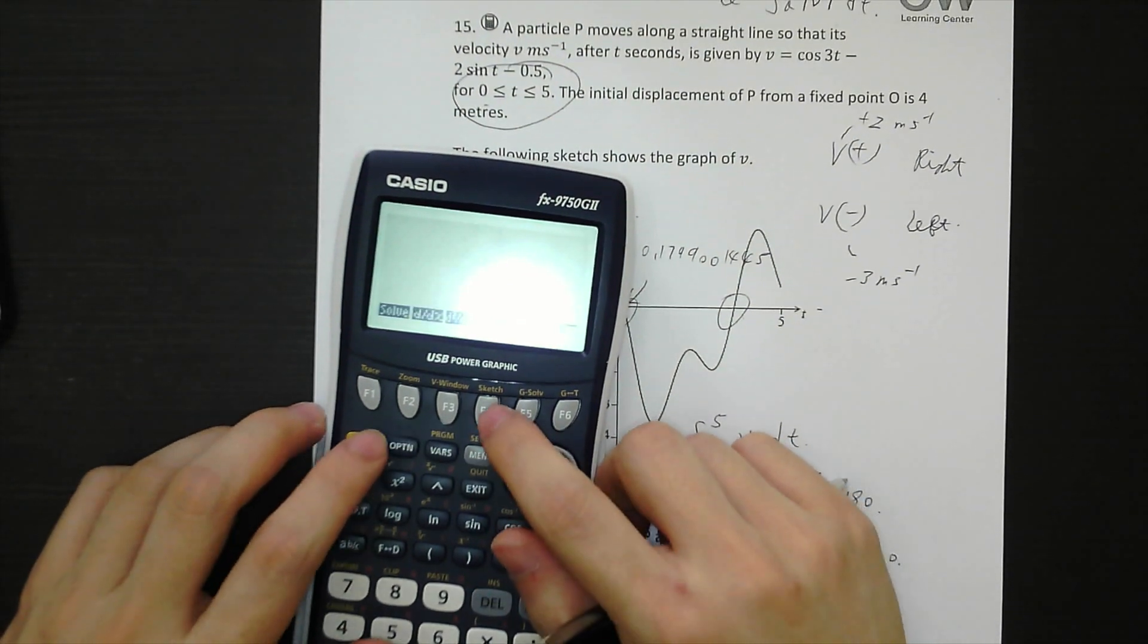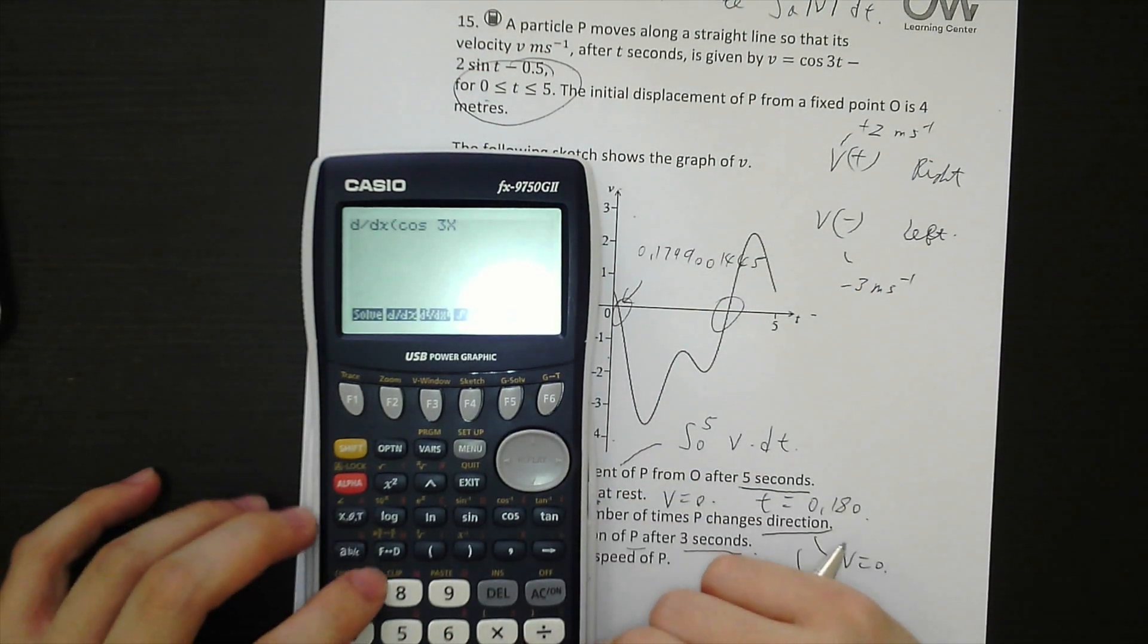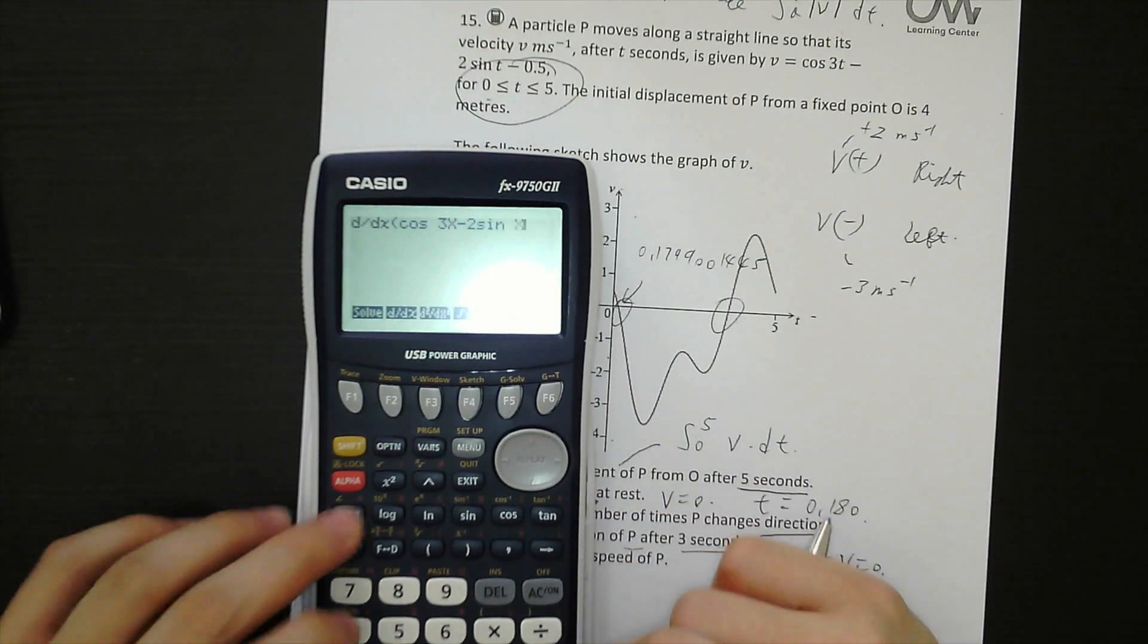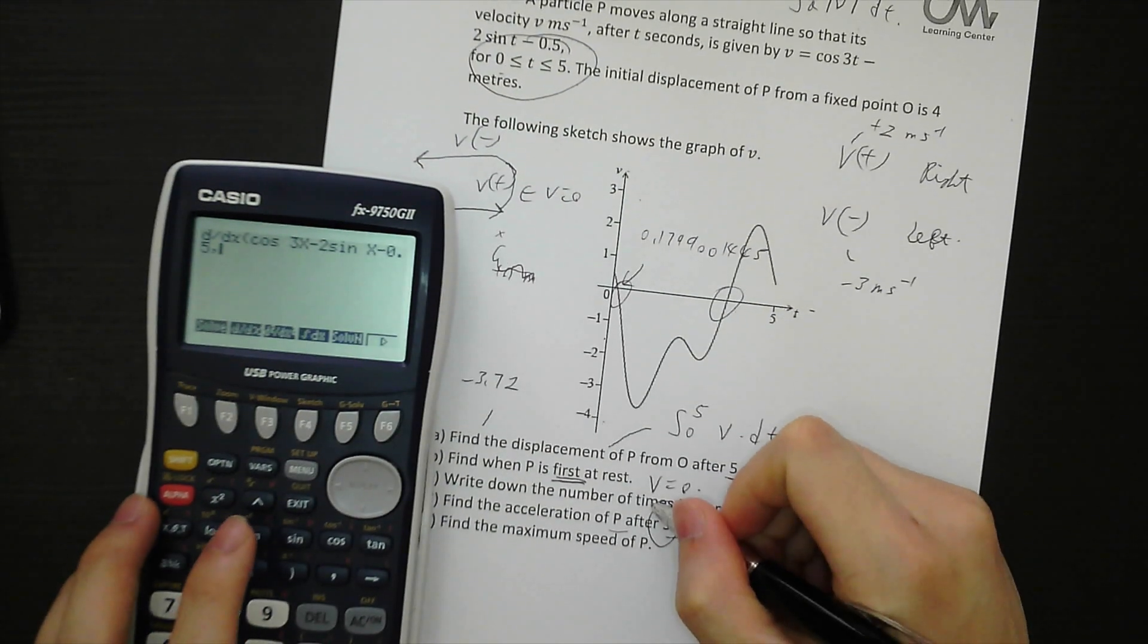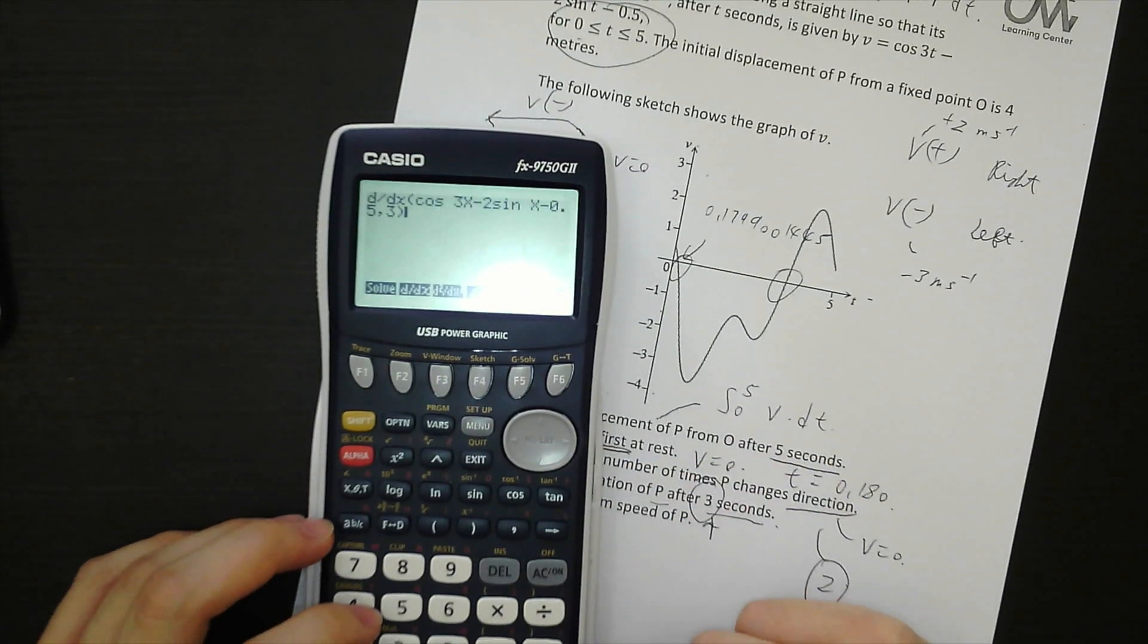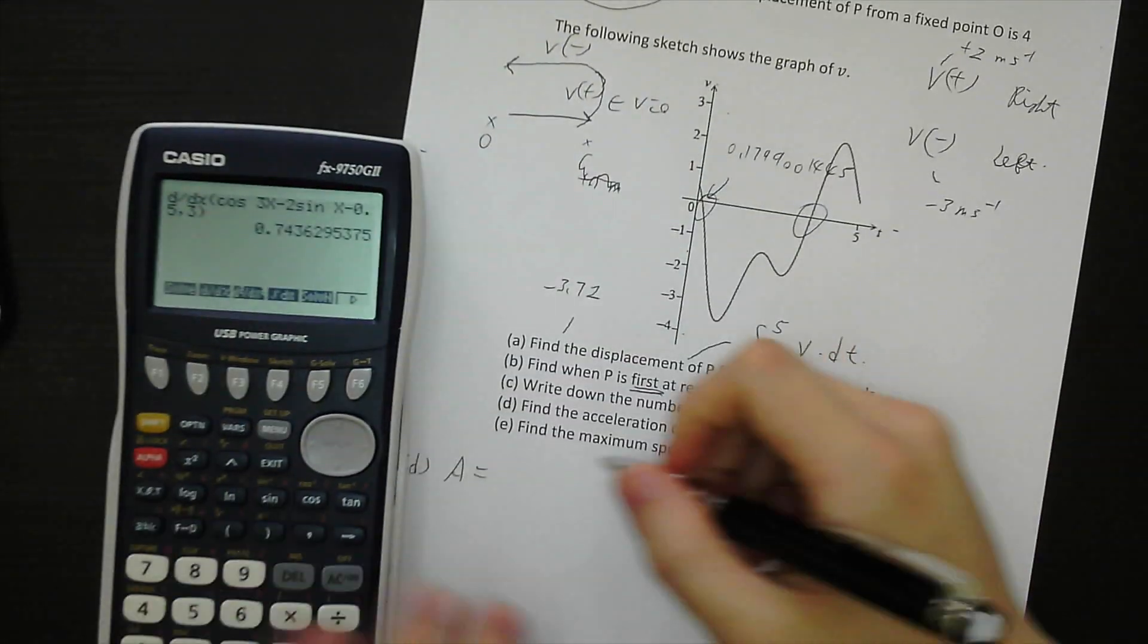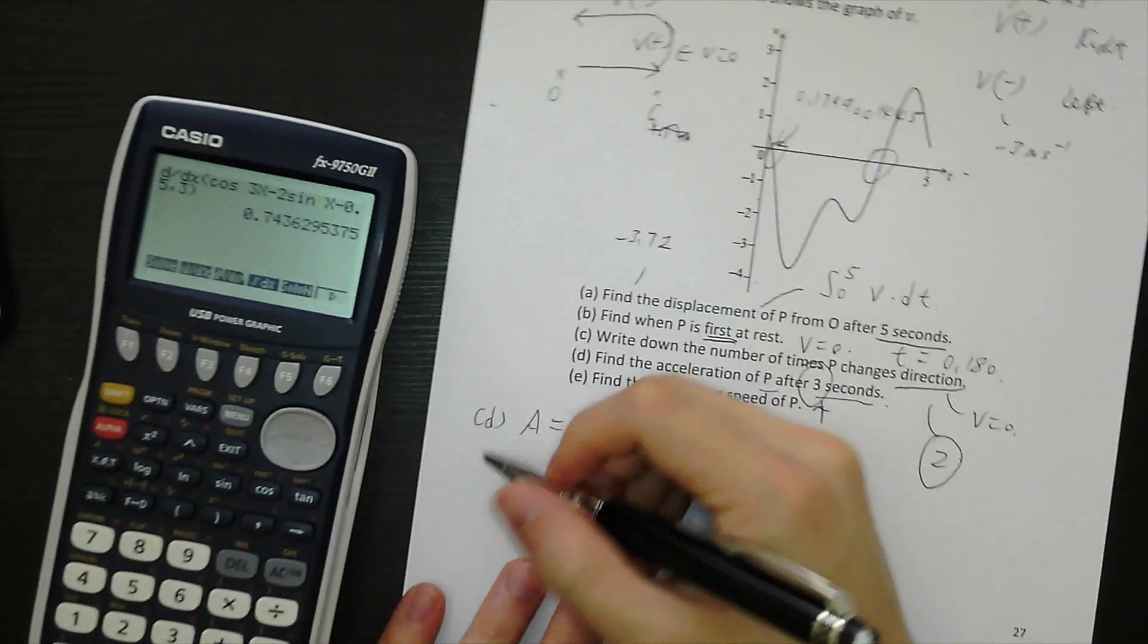Option calc and differentiation for the function cos 3x minus 2 sine x minus 0.5. And then when t equals 3, comma 3. And the acceleration is 0.744, three significant figures.